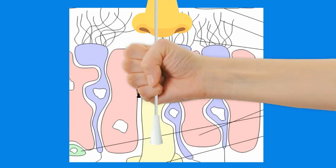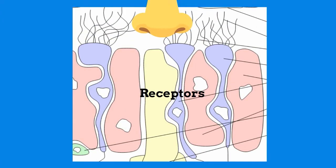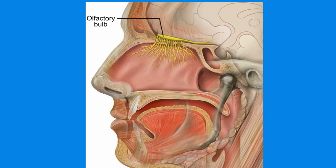Once an odor molecule binds to a receptor, it initiates an electrical signal that travels from the sensory neurons to the olfactory bulb, which is a structure at the base of the forebrain.